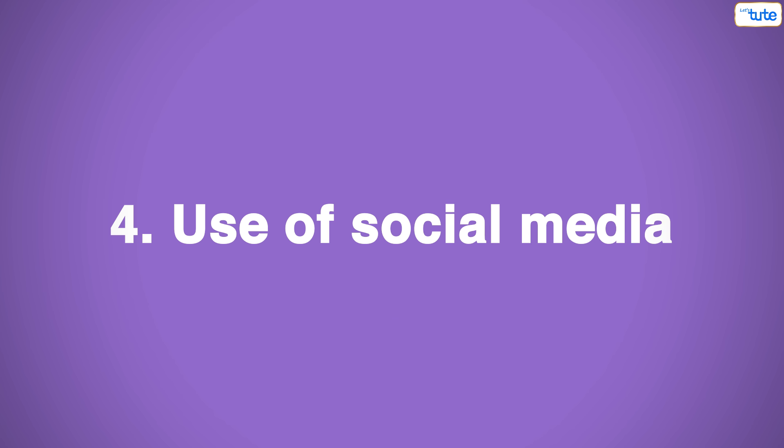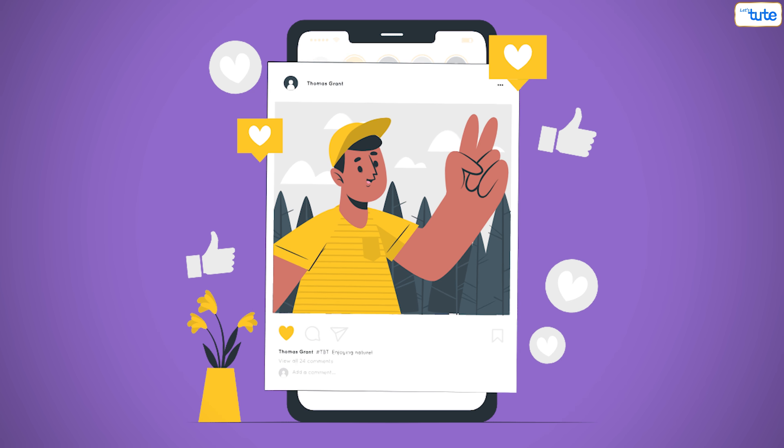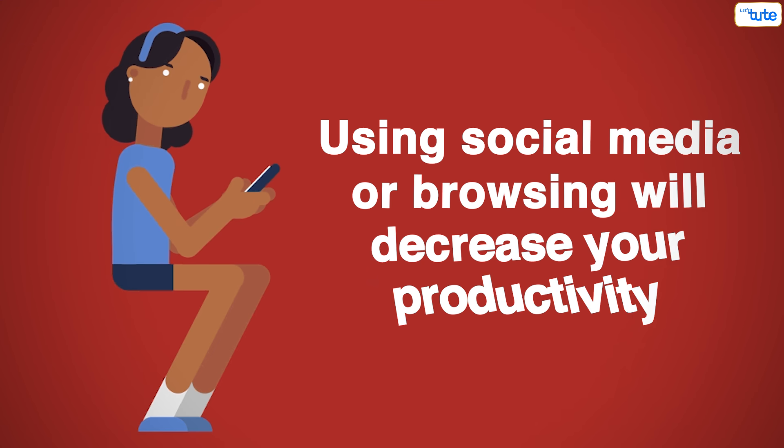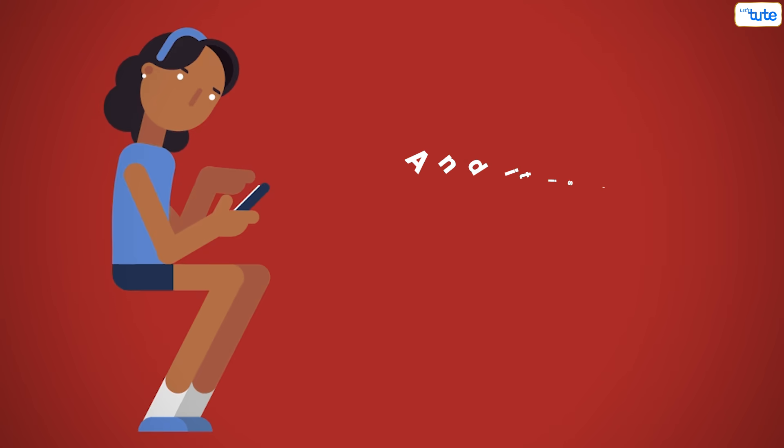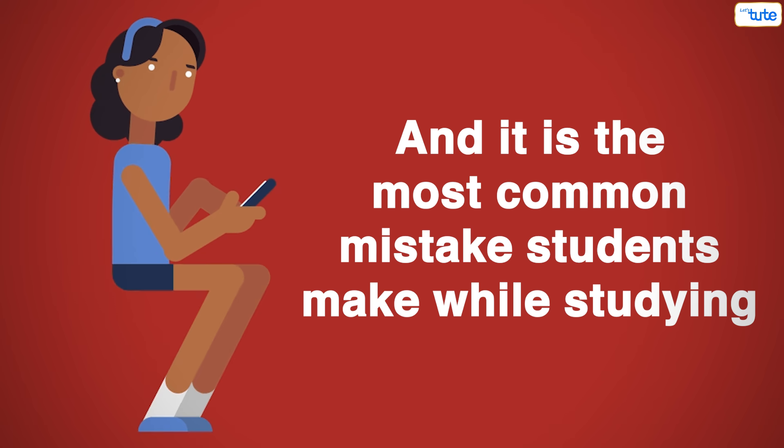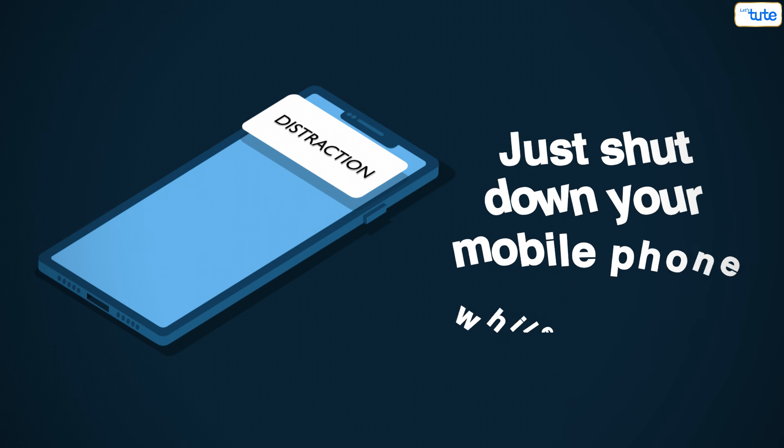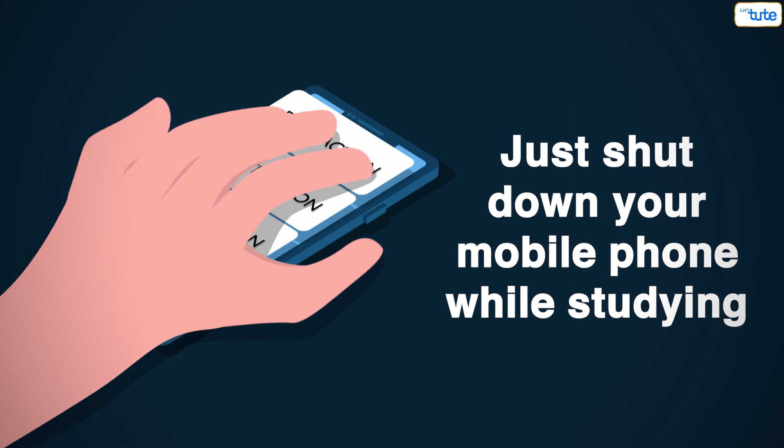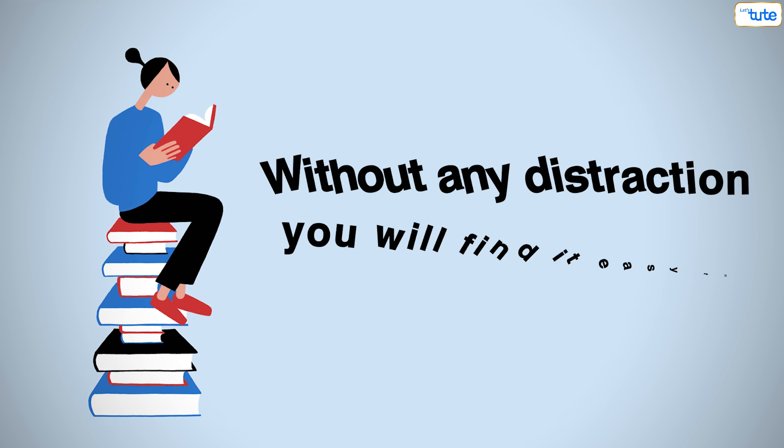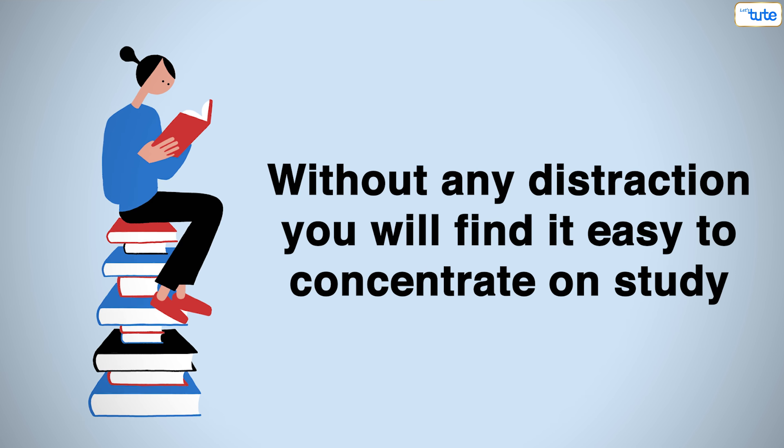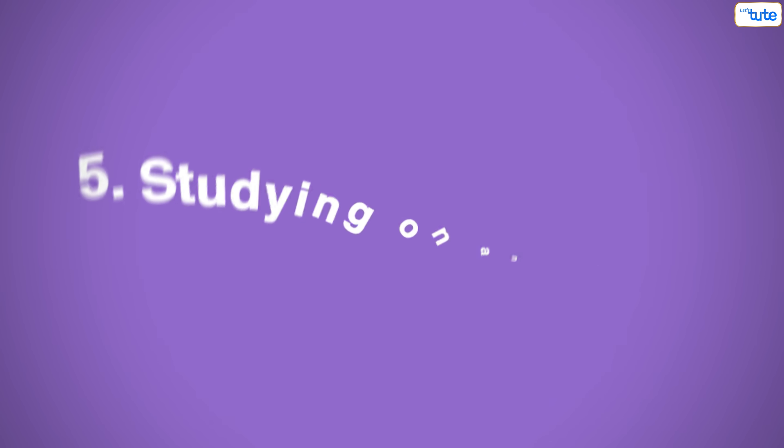Tip number 4: Use of social media. Using social media while studying or browsing unwanted things on the internet can reduce your productivity level. This is a common mistake most students make. To avoid this, just shut down your mobile phone while studying. Without distraction, you'll find it easier to concentrate on your studies.